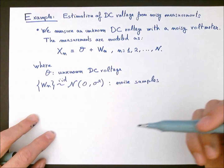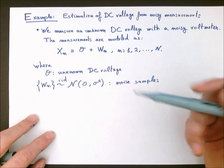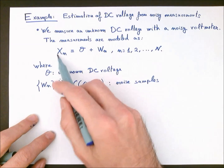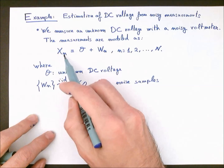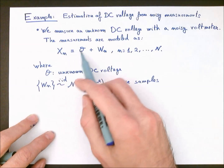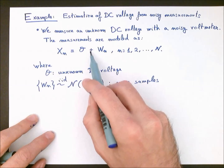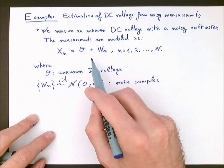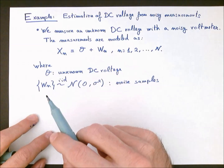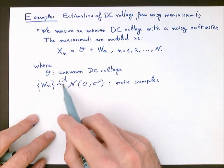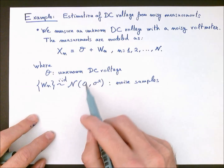We can model each of the measurements obtained with this voltmeter — maybe we obtain several of them, capital N — as the observations or data X_n, which is going to be equal to the true voltage that we want to estimate, but with a noise process W added on top. We have modeled the noise process as an IID Gaussian process with zero mean.